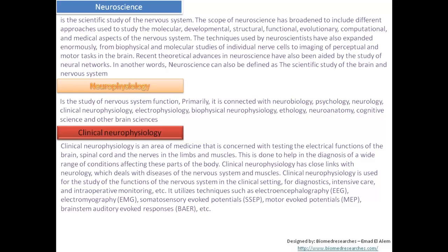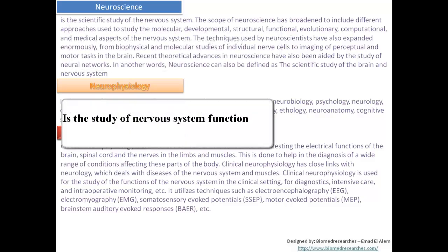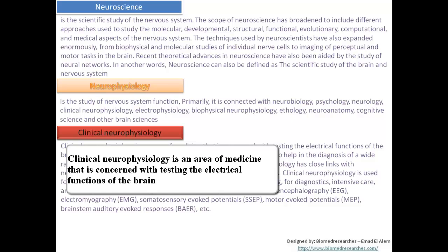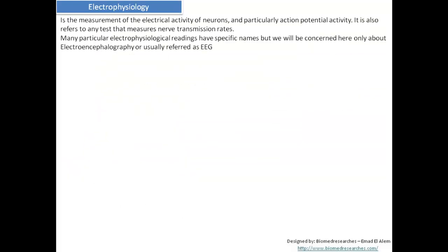To review: neuroscience is the scientific study of the nervous system; neurophysiology is the study of the nervous system functions; clinical neurophysiology is an area of medicine concerned with testing the electrical functions of the brain, spinal cord, and nerves in the limbs and muscles. Electrophysiology is the measurement of electrical activity of neurons — nerve cells — and particular action potential activity. It also refers to any test that measures nerve transmission rate. We will be concerned here specifically with electroencephalography, or EEG.